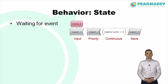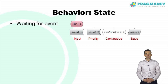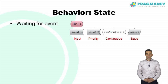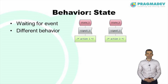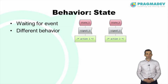A state is defined by its name. When in a state the process is waiting for some event to go on. The event can be a message input, priority input, continuous signal, or a save. The same event can generate different behavior depending on the state the process is in. For example, signal 1 may trigger the execution of either action 1 or action 2 depending on whether the process is in state 1 or state 2.